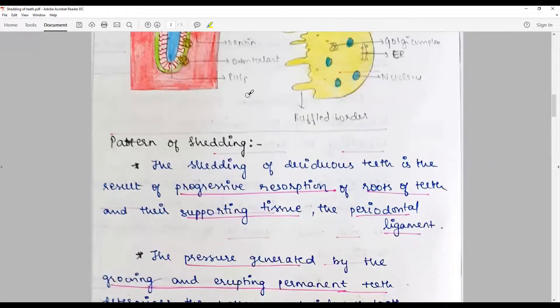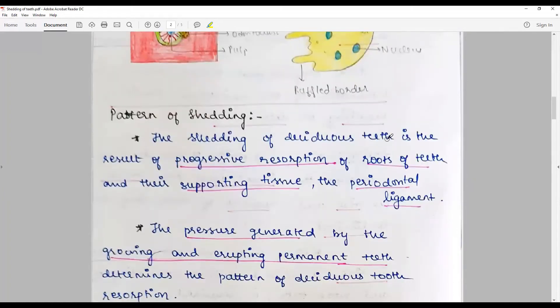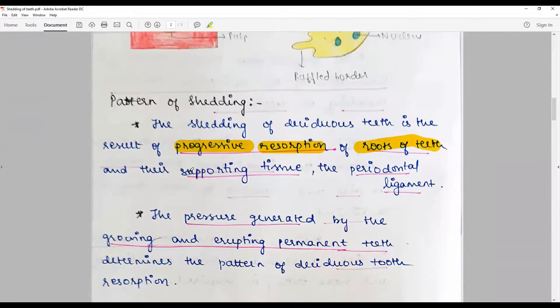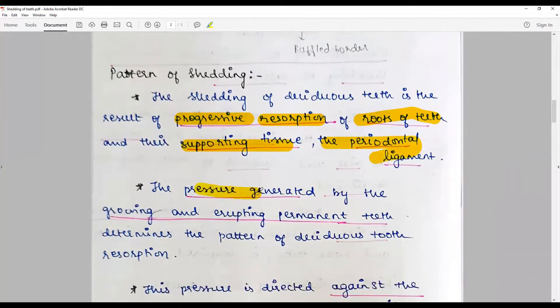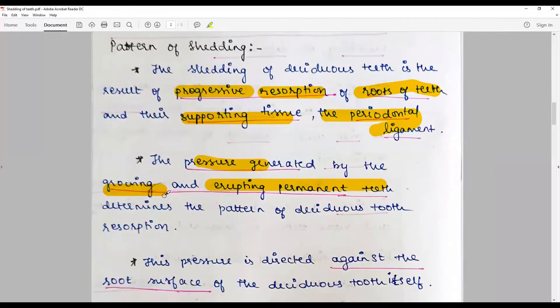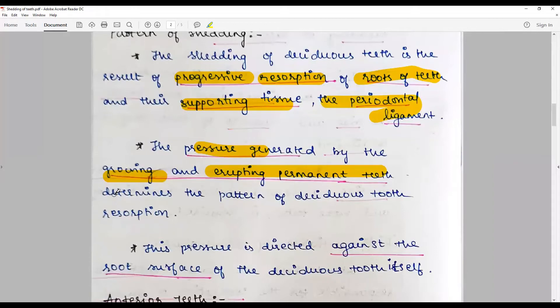Like osteoclasts, they also have resorption base. The shedding of deciduous teeth is a result of progressive incremental resorption of roots of teeth and their supporting tissue, namely the periodontal ligament. The pressure generated by the growing and erupting permanent teeth is the single most important factor that determines the pattern of deciduous tooth resorption.